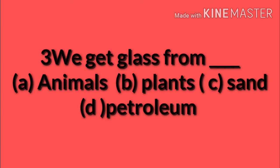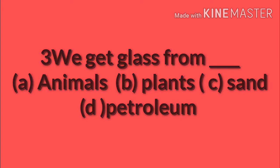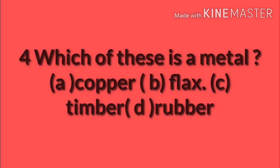Third MCQ: We get glass from — animals, plants, sand, or petroleum? We get glass from sand. Fourth: Which of these is a metal — copper, flax, timber, or rubber? Flax is a plant, timber is wood, rubber we get from a tree — so copper is a metal.